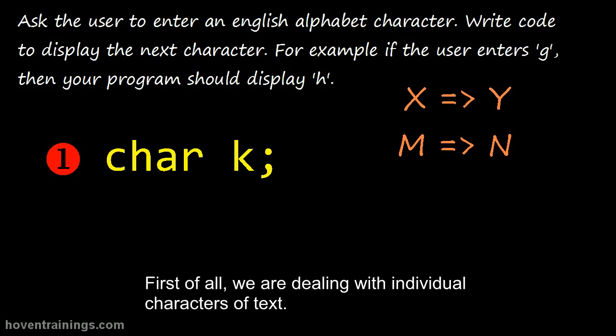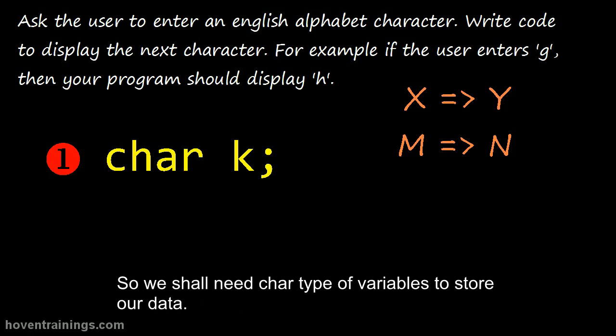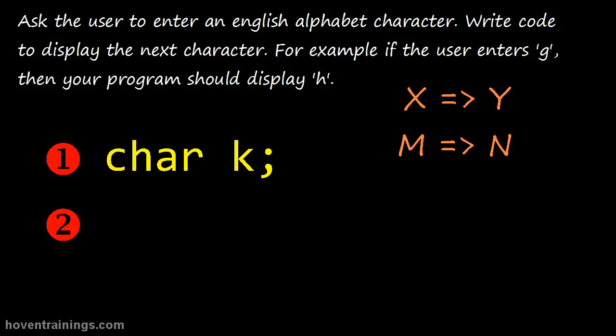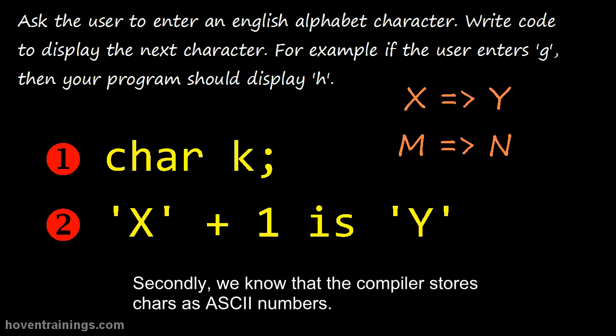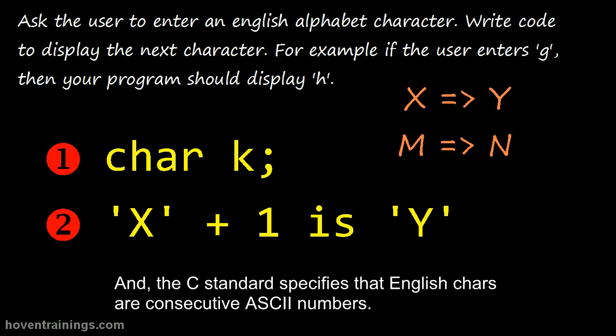First of all, we are dealing with individual characters of text. So we shall need char type of variables to store our data. Secondly, we know that the compiler stores chars as ASCII numbers. And the C standard specifies that English chars are consecutive ASCII numbers.